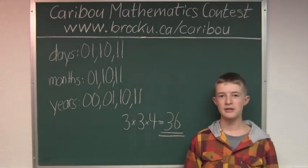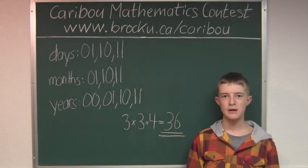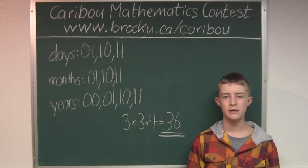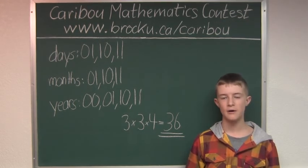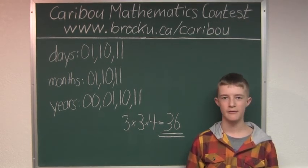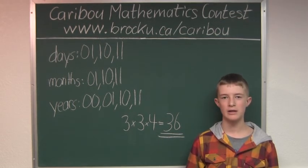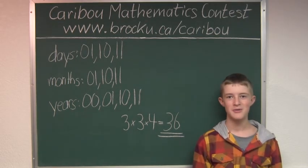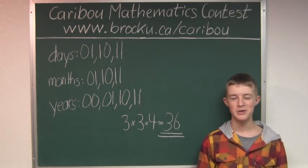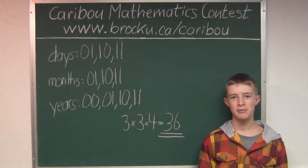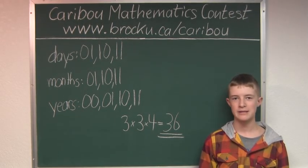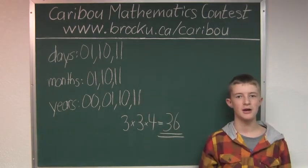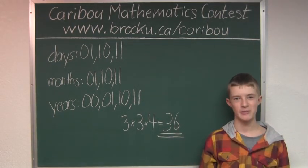So we know 36 dates between the beginning of the year 2000 and the end of 2011 can be written using only 0 and 1. If you'd like to know more about this contest, please feel free to visit our website at www.brocku.ca/caribou.